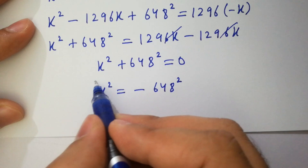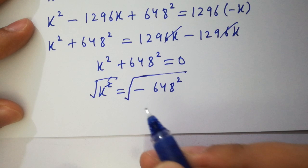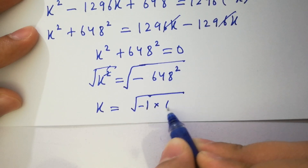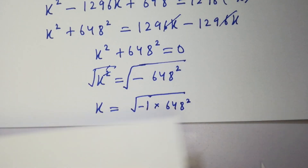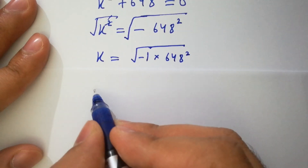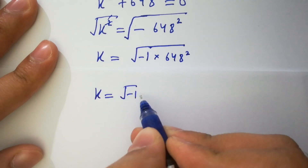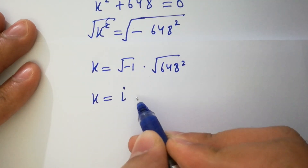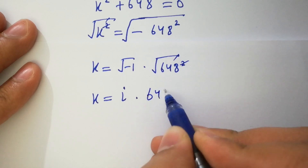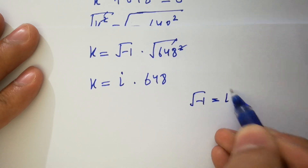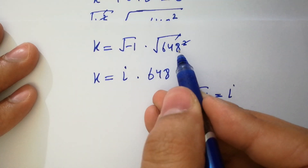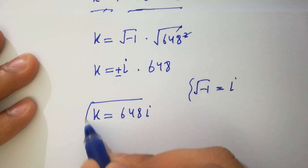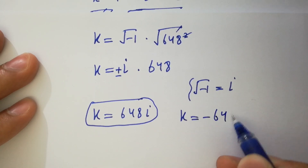It can be solved by taking square root on both sides. The square cancels from square root, giving k equal to square root of minus 1 times 648 squared, which equals square root of minus 1 times square root of 648 squared. As we know square root of minus 1 equals i, and the square cancels from square root giving 648. So finally, k equals positive or negative 648i.